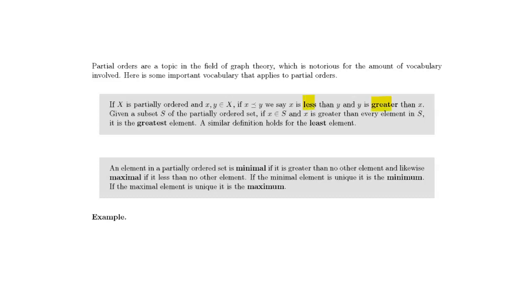The first vocabulary is pretty straightforward. If X is partially ordered, and x and y are elements of X related to each other in the partial order, we say that x is less than y, and y is greater than x. Given a subset of the partially ordered set, if x is greater than every element in that set, it is the greatest element; otherwise it is the least element. An element in a partial order set is minimal if it is greater than no other element, and it is maximal if it is less than no other element. If the minimal element is unique, we call it the minimum, and if the maximal element is unique, we call it the maximum.